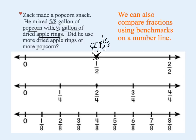which is the same thing as four-eighths. Zach also mixed five-eighths gallon of popcorn, so here's what he has with the popcorn. Looking at our number line, we can see that five-eighths is greater than four-eighths, so we know he used more popcorn.